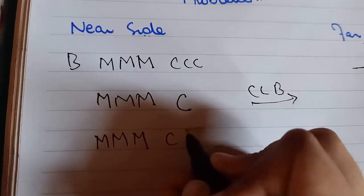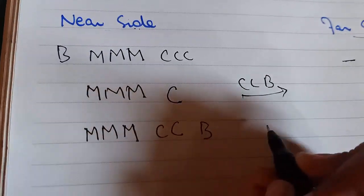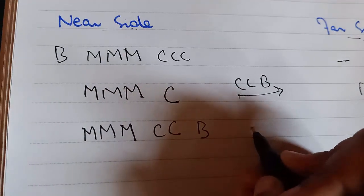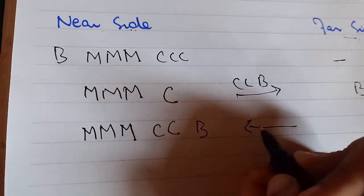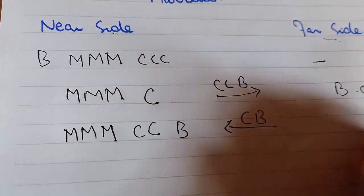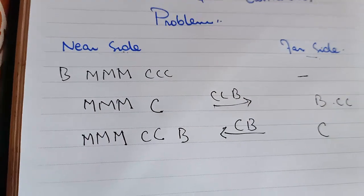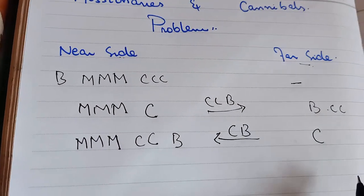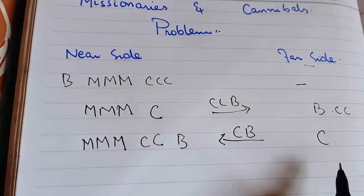Now at the far side we have three missionaries, two cannibals, and one boat. And at the near side we have one cannibal.